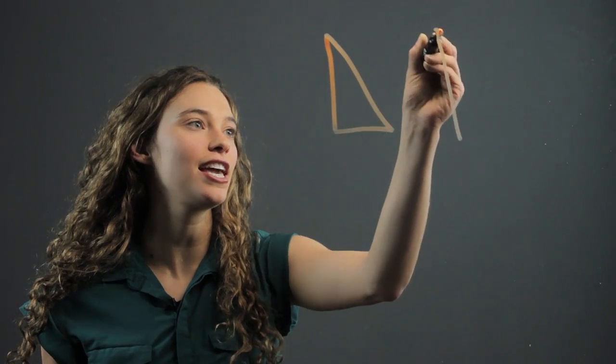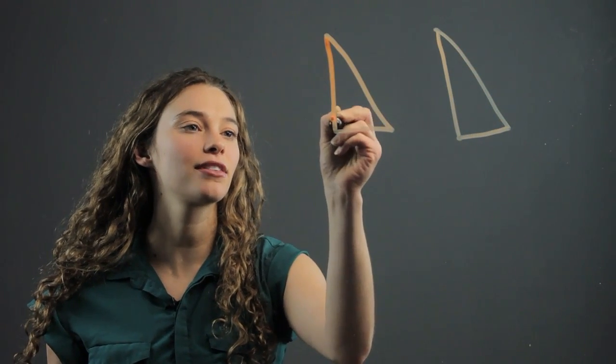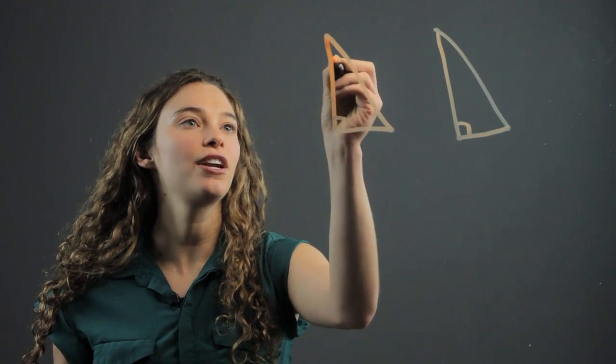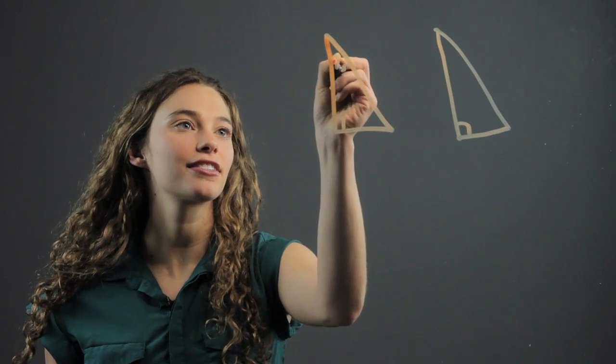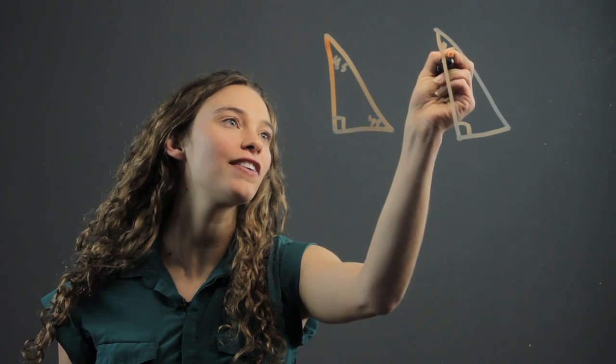That means that if we have two triangles, let's say these are two right triangles and they're both 45 degree angles. 45, 45, 45, and 45.